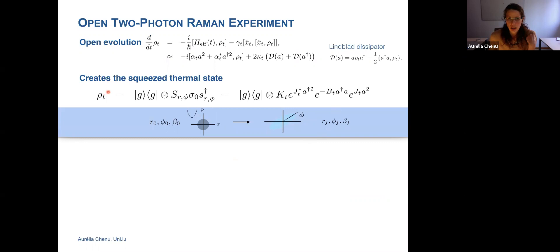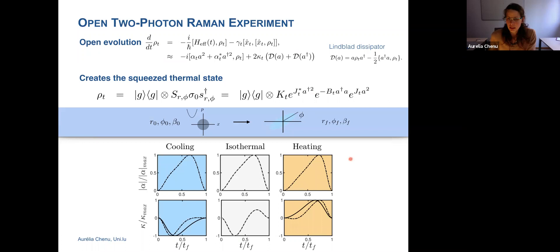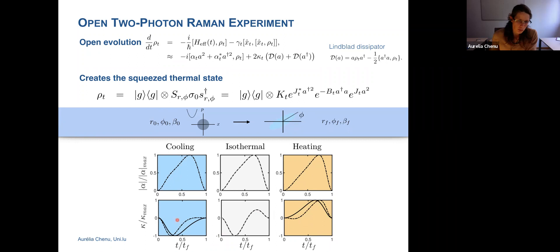The relative phase between the lasers dictates the phase of the squeezed state and the correlation between momentum and position. We implement open dynamics with the same master equation, generated by adding noise on the amplitude of the lasers. This master equation can create a squeezed thermal state at arbitrary temperature and arbitrary phase. The control parameters to implement in the lab are: alpha — the laser amplitude for cooling, isothermal, or heating processes; and kappa — related to the phases. The main difference between heating and cooling is that heating requires a positive dephasing rate, while cooling requires a negative dephasing rate.